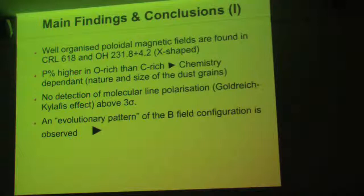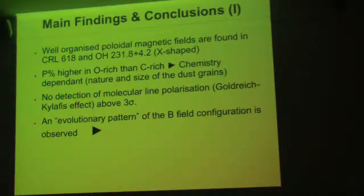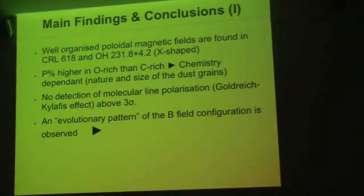So I will go to my main findings and conclusion. We have in both objects the detection of a well-organized poloidal or collimated magnetic field. In the case of OH 231.8, we have the nice X-shaped distribution of the magnetic field. The percentage of polarization is higher in the oxygen-rich object than the carbon-rich object — this is something that we have seen before when studying other types of objects. What we can say is that the percentage of polarization is chemistry dependent. It depends on the nature of the grains. In the oxygen-rich object, for example, if you have big grains, they are big enough to contain inclusions, and those inclusions can be super-paramagnetic — iron or magnetite — and if you have that, your percentage of polarization will of course be higher, and most importantly, the efficiency of the alignment will be higher.